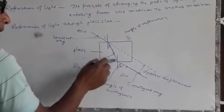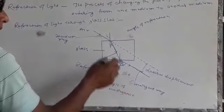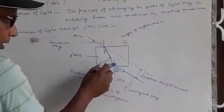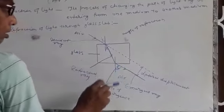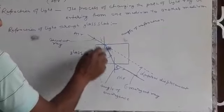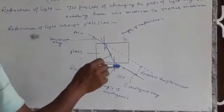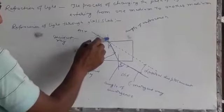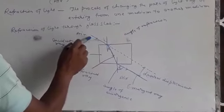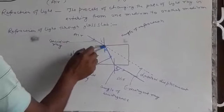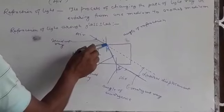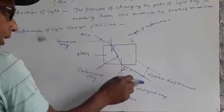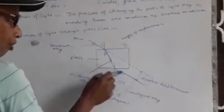Once again there is a change in medium — light ray is going from glass to air. There must be a change in speed, so the light ray changes its path here again. So there are two points where the light ray changes its path. Going from air to glass, the light ray bends toward the normal at the first point. When the light ray goes from glass to air, it bends away from the normal.